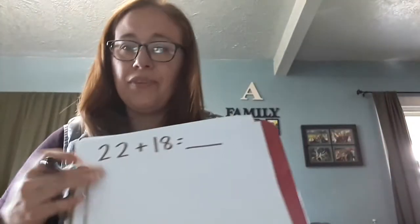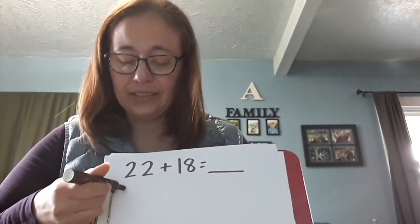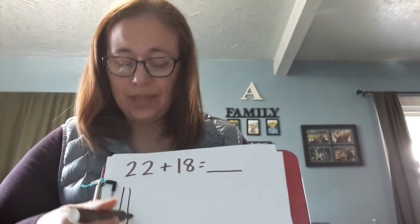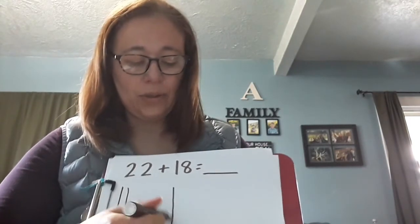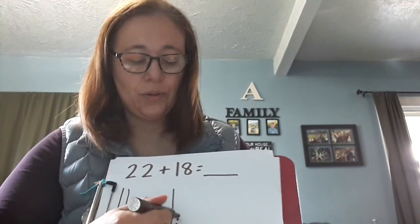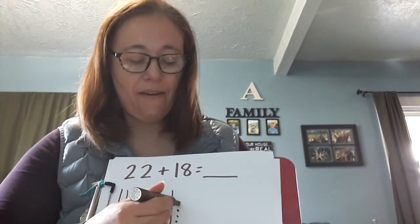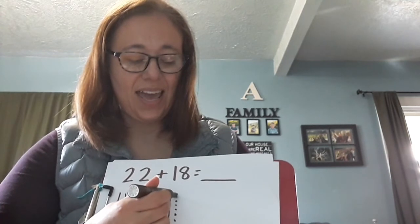Okay, I've got one more that I wanted to model for you because this one you'll see why the rainbow math to ten is so important. You have twenty two. I'm going to model that as two sticks of ten and two ones. And then eighteen, one stick of ten, and one, two, three, four, five, six, seven, eight.